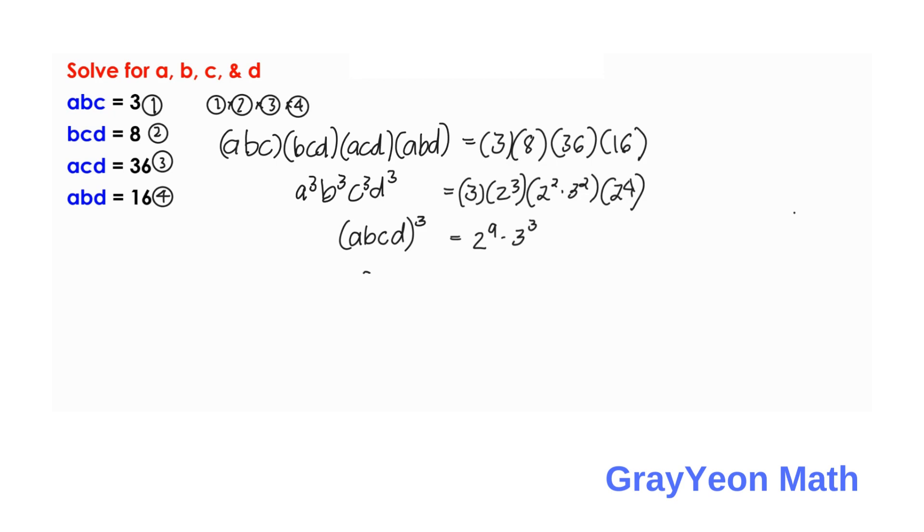So, we just need to copy this, abcd cubed, and equal to 2 to the 9th can be written as 2 cubed to the 3rd power times 3 to the 3rd power. So, we can put the cube outside the common cube. Inside we remain 2 cubed times 3, all cubed, so abcd cubed. This is actually, on the inside, it is 24 cubed. Because 2 to the 3rd is 8 times 3 is 24.